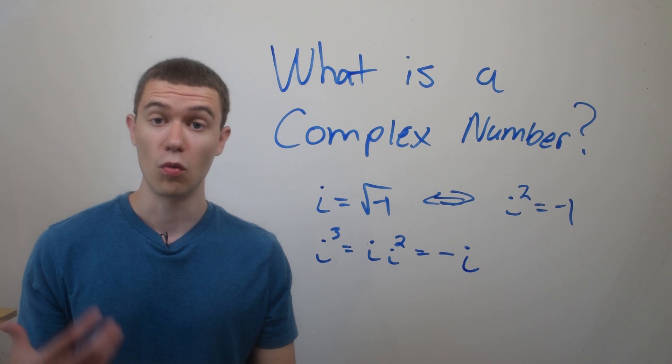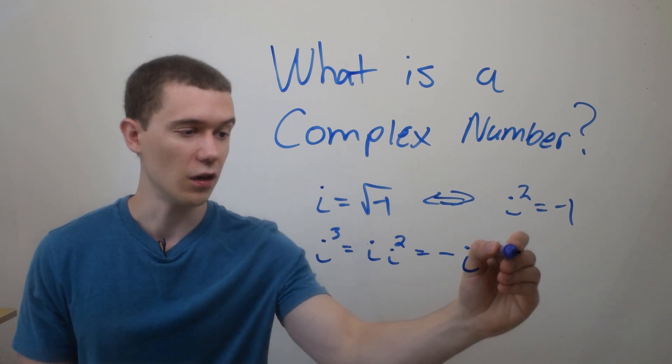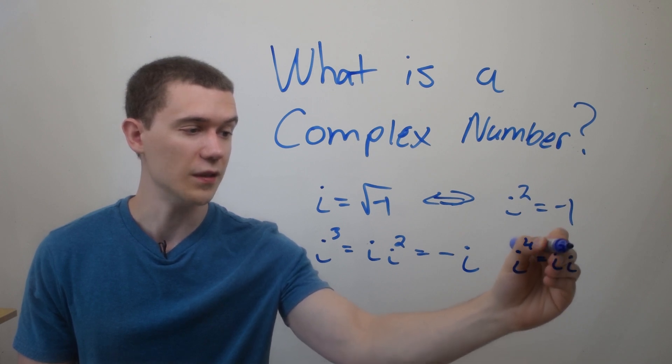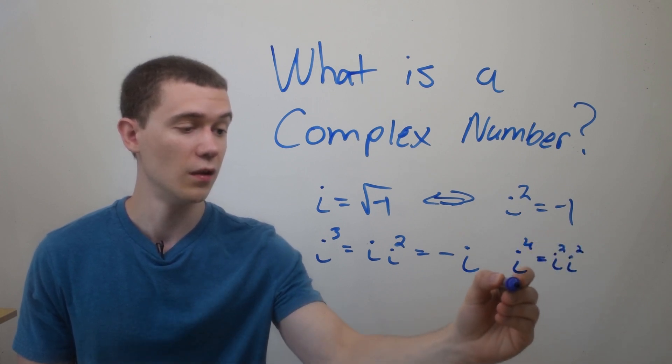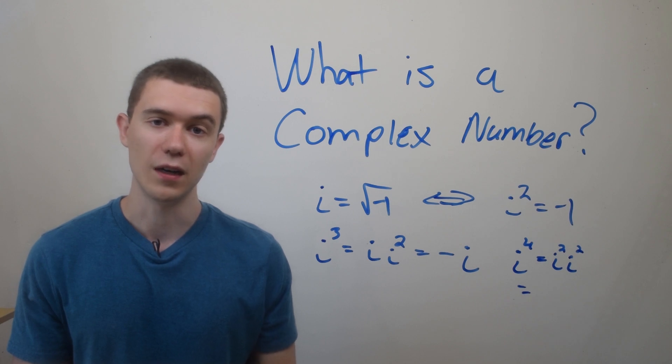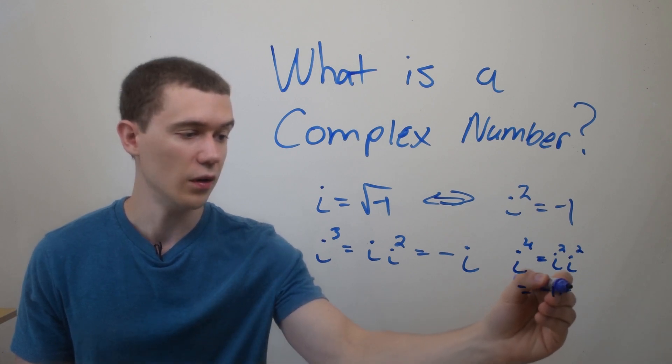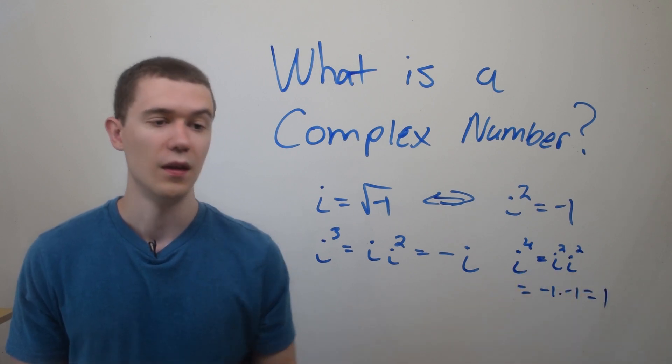I could go one step further and talk about i to the fourth, which using properties of exponents is i squared times i squared. But we know i squared is negative one, so negative one times negative one is one.